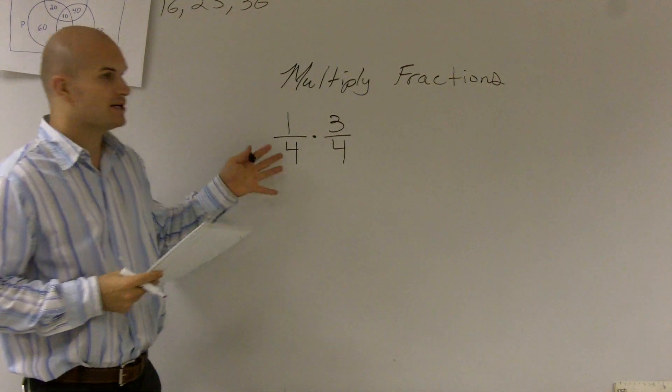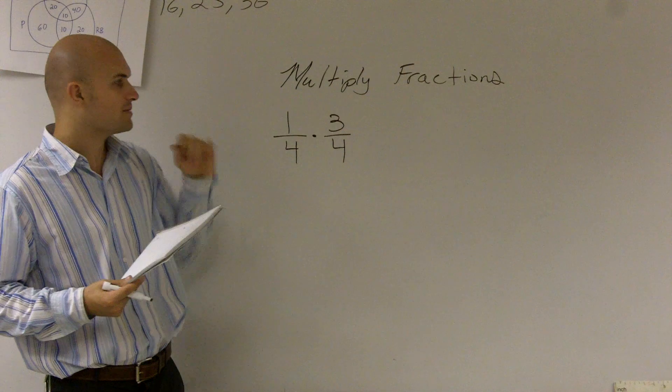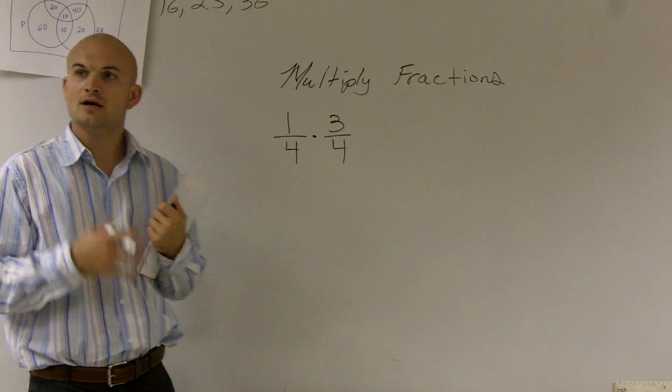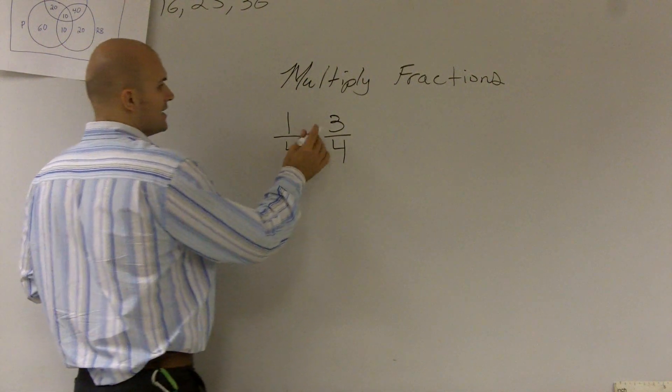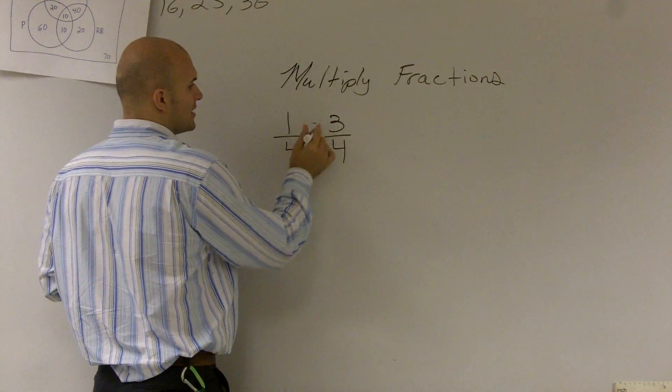is because when you're multiplying fractions, we don't have to worry about our lowest common denominator. What we can simply do is multiply our numerators times our numerators and multiply our denominator by our denominator.